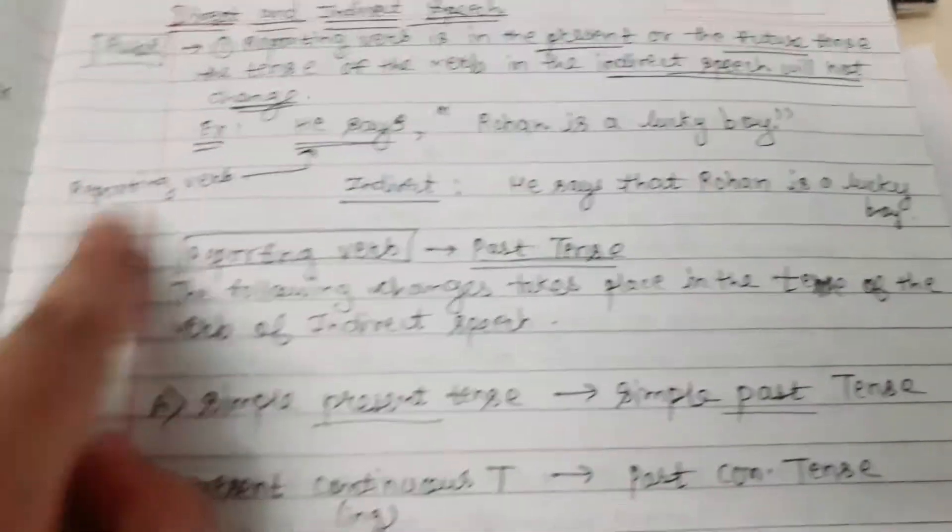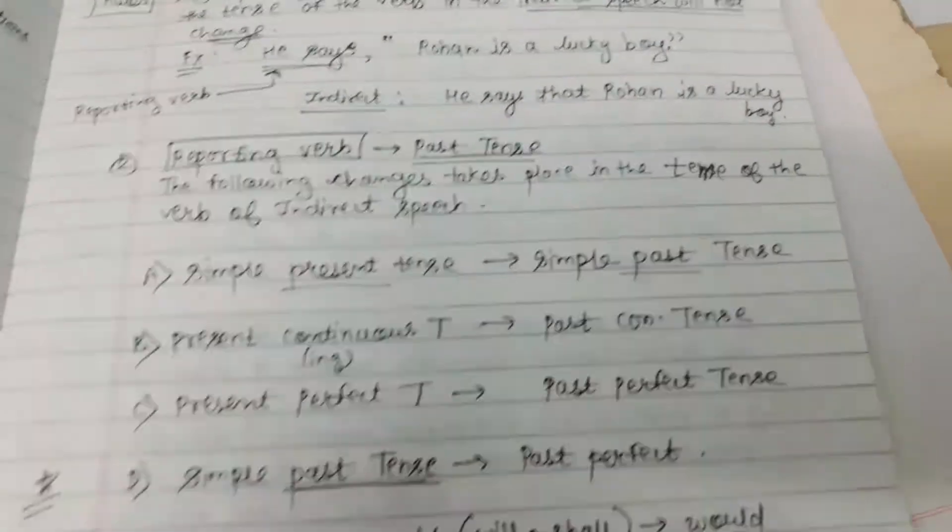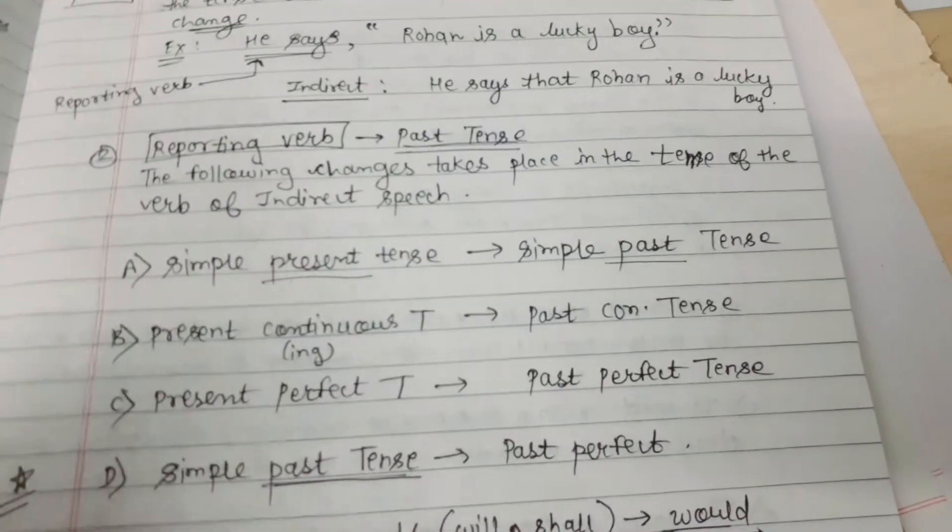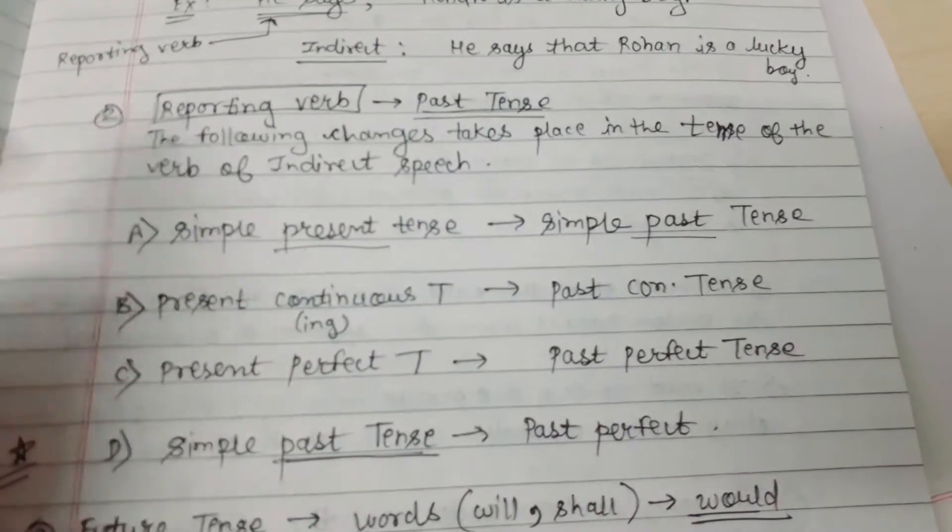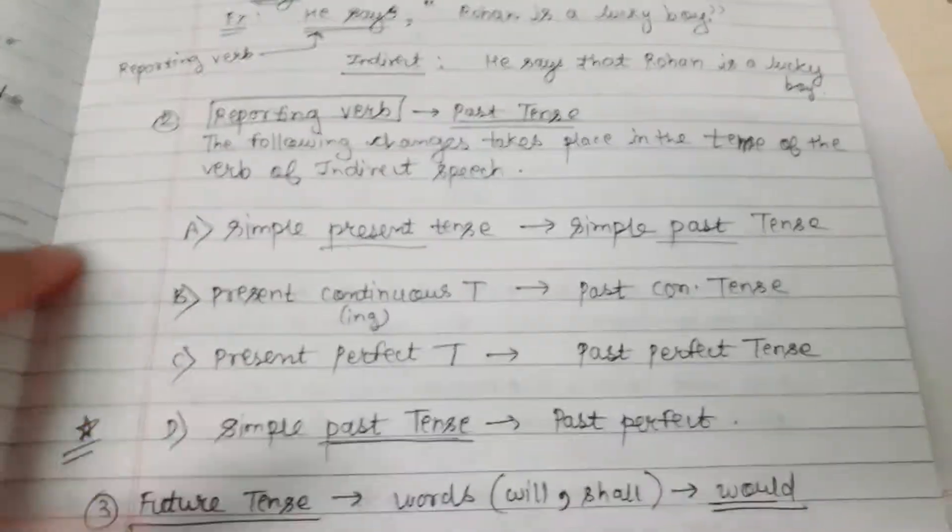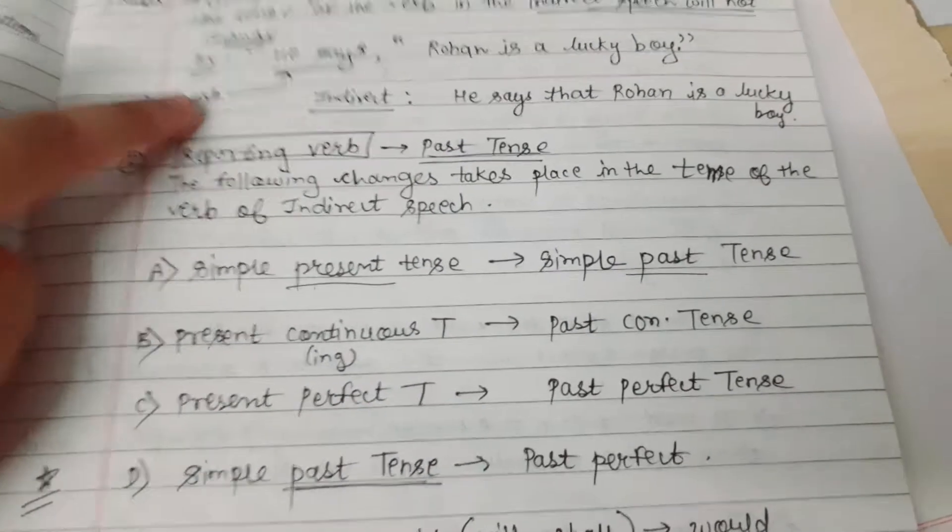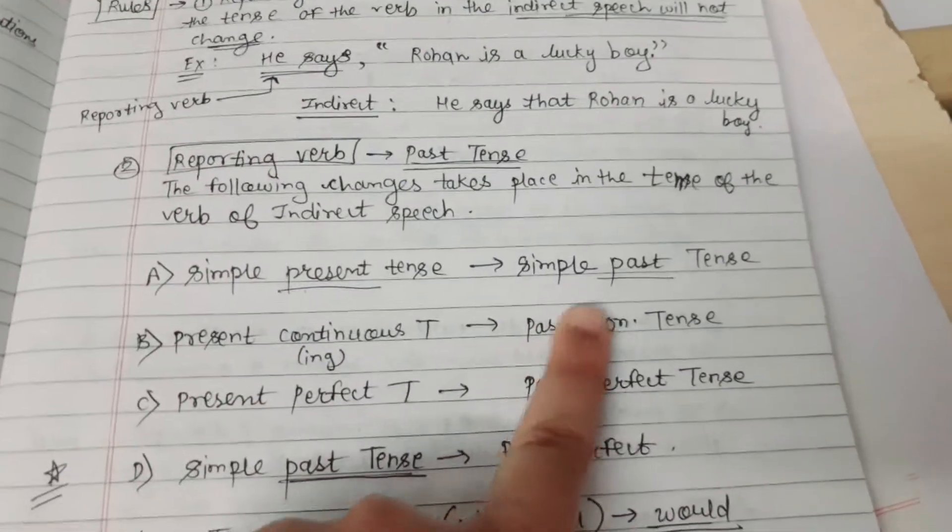Rule 2: When the reporting verb is in the past tense, the following changes take place in the tense of the verb of indirect speech. If the verb is in simple present tense, then the conversion will be to simple past tense.